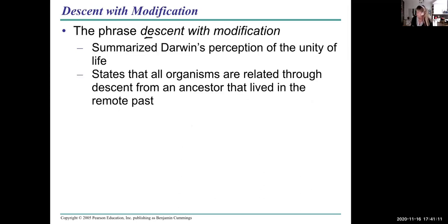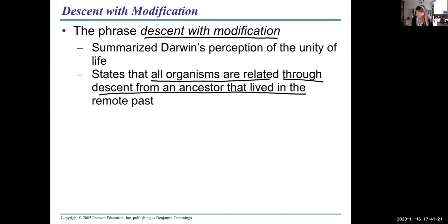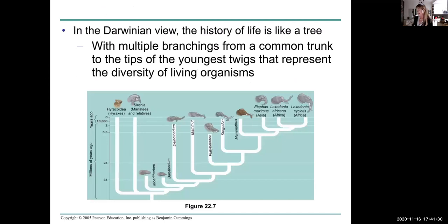The phrase 'descent with modification' really sums up Darwin's perception. It states that all organisms are related through descent from an ancestor that lived in the remote past. Let's look at a phylogenetic tree — an ancestral tree or tree of life — with lots of branching from a common trunk.